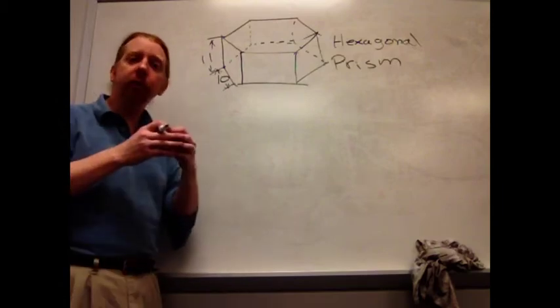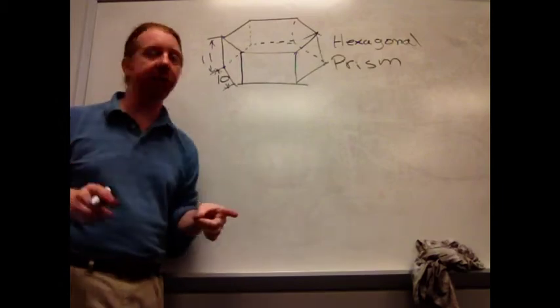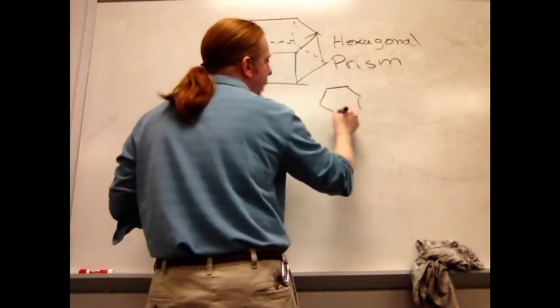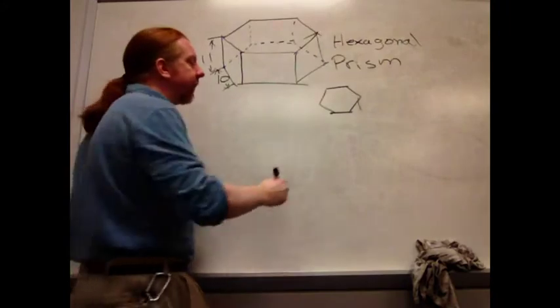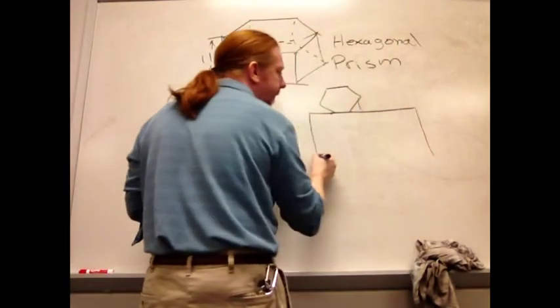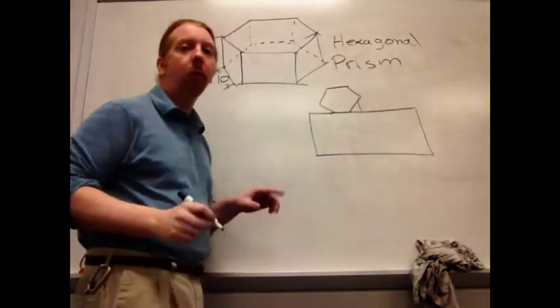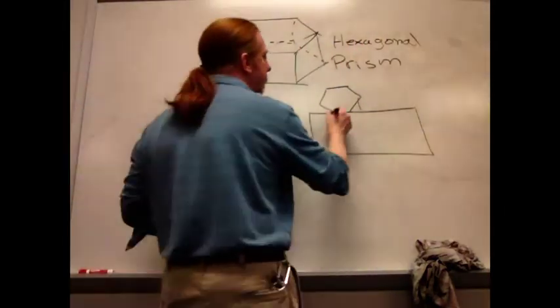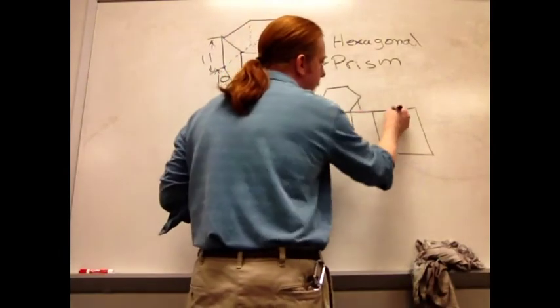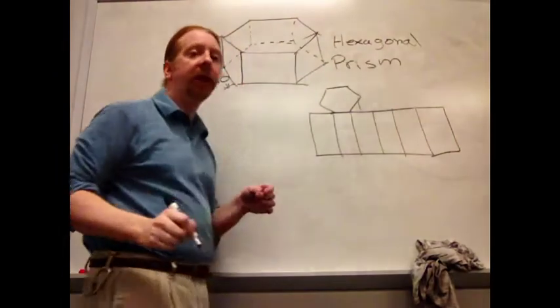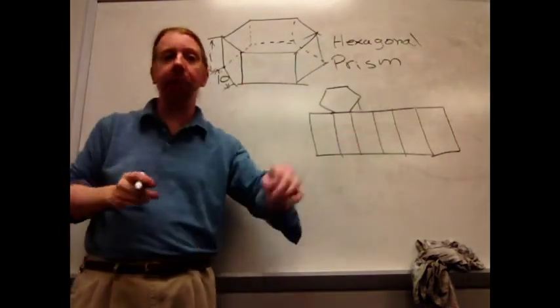When I go to draw the net that goes with this, I'm going to have a hexagon as one side of it. Then, I'll have a lateral area wrapping around the piece. What I'm really looking at with that, one, two, three, four, five, six rectangles all lined up.